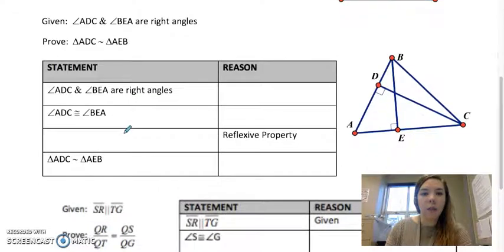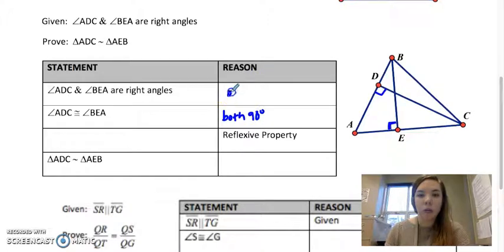Angle ADC and angle BEA are right angles. So those are already marked on here for us. And it says angle ADC is congruent to BEA. So ADC and BEA are congruent because they are both right angles. Okay, and this was given to us.